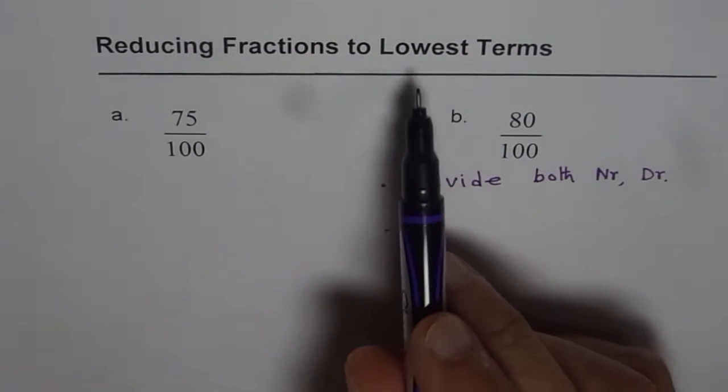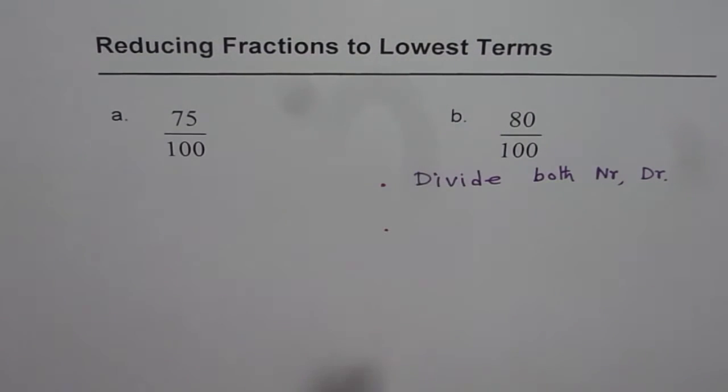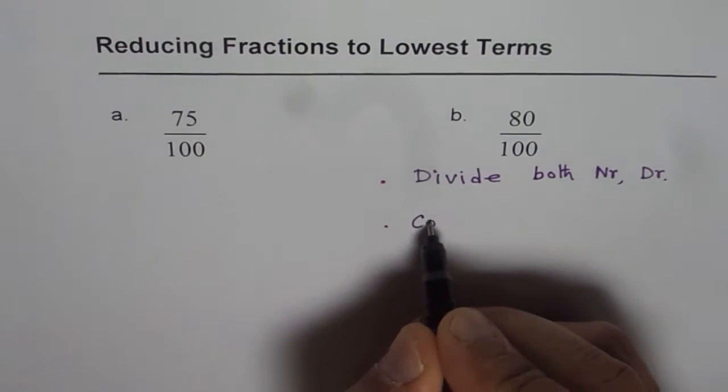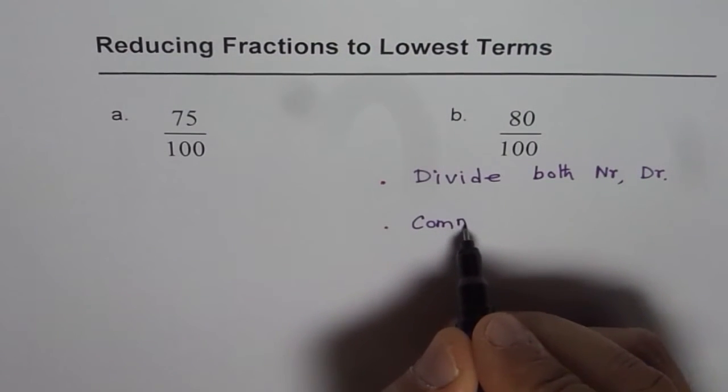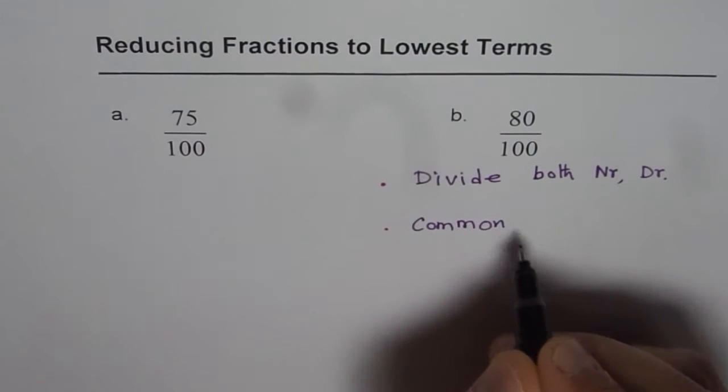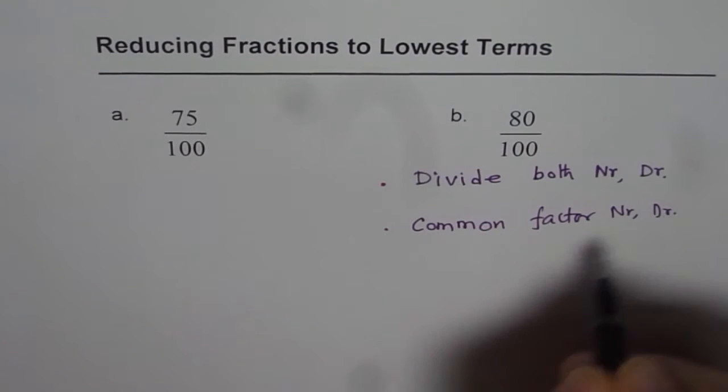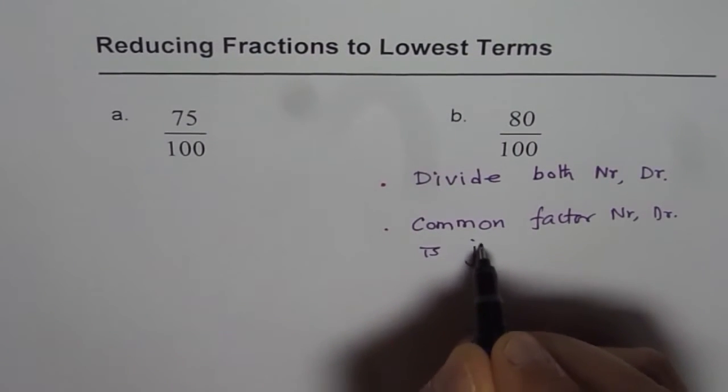And second was, what is lowest terms? Lowest terms means that you cannot divide further. That means the only common factor between numerator and denominator is just one.